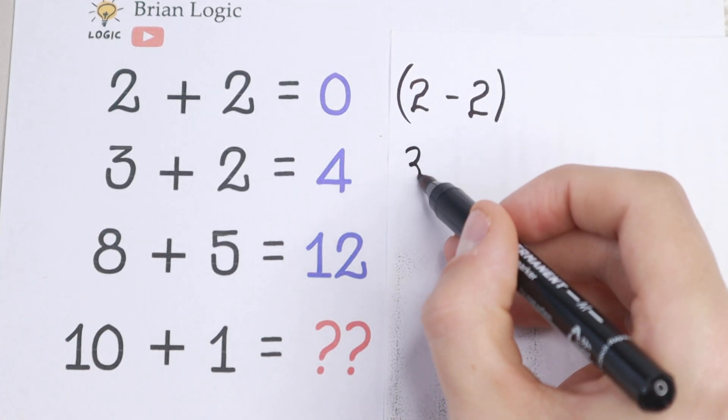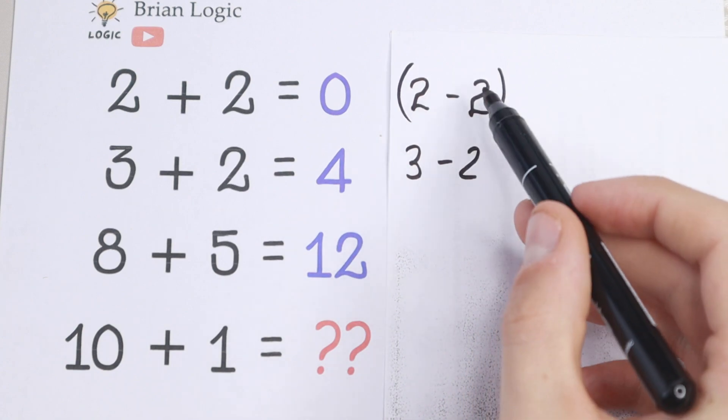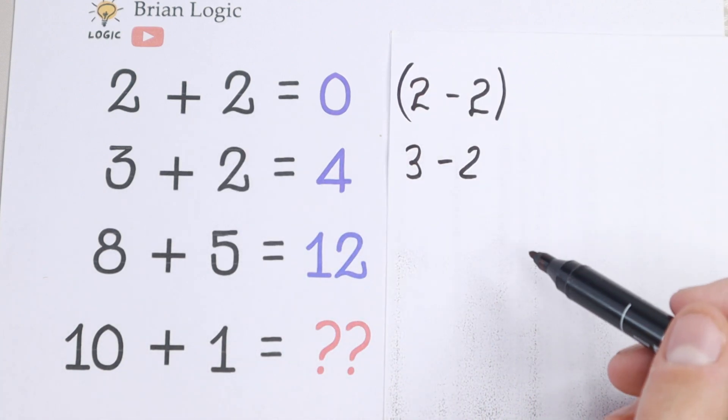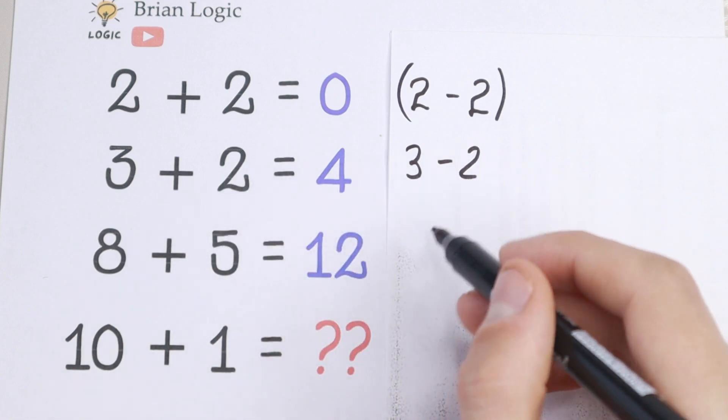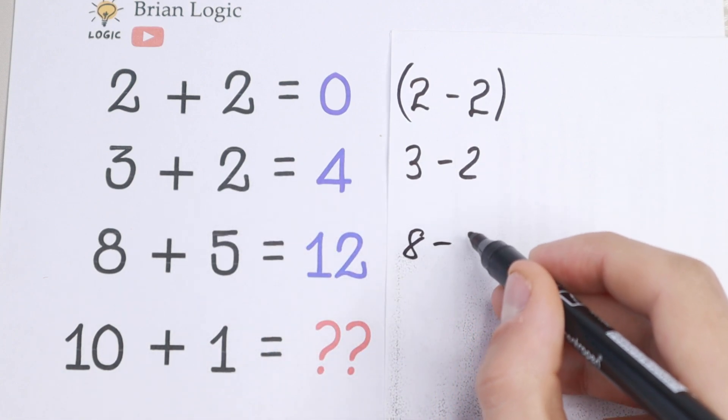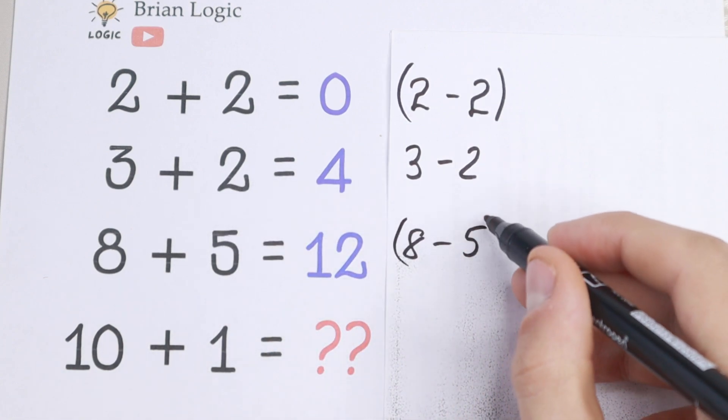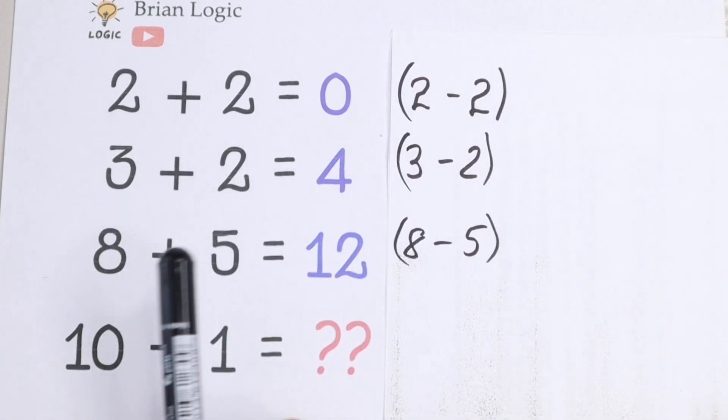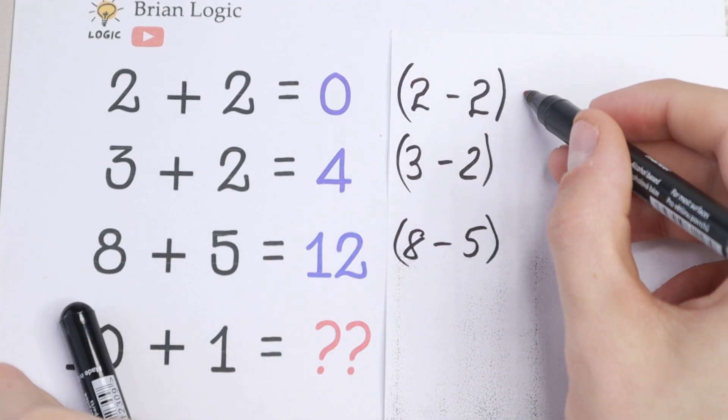And 3 minus 2, let's write it as well. Let's use this logic. Let's change this plus to minus sign. So write here 3 minus 2, and the last row 8 minus 5. So take a look what we will have. If we subtract the first row, 2 minus 2, we will have 0, which is really good,